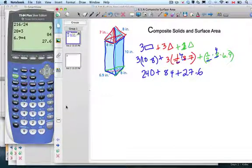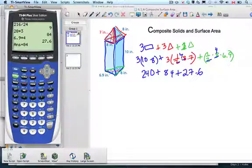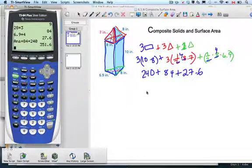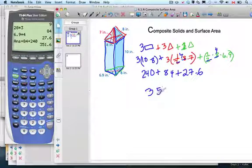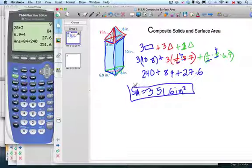And we add them all up. This takes a little while. 240 plus 84 plus 27.6 equals 351.6. And units is inches squared. Nice. All right, thank you. There's that one.